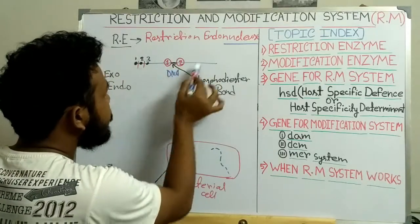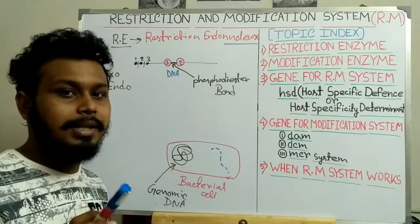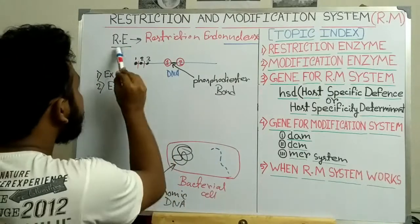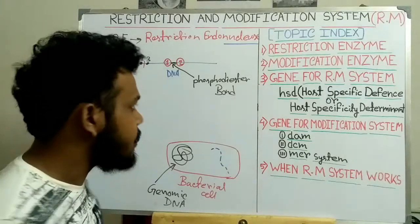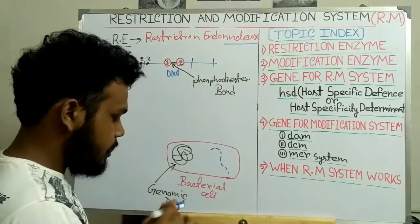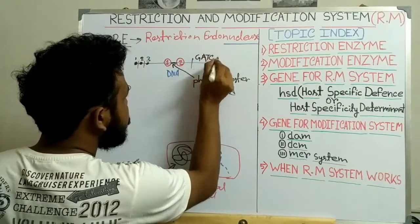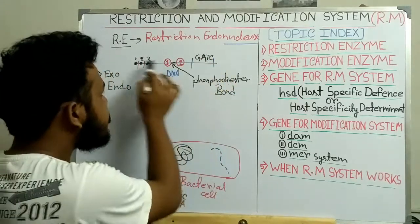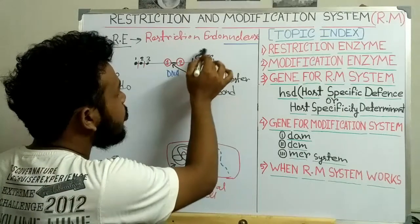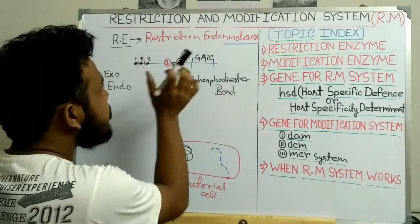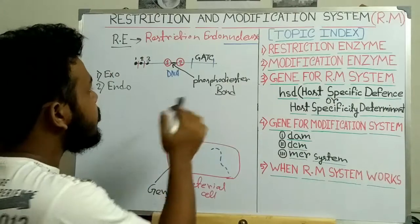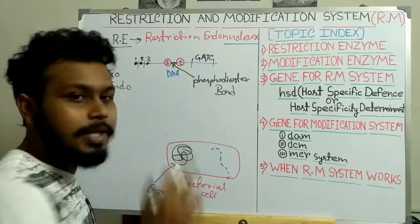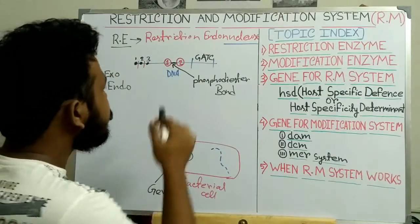As an endonuclease, the restriction enzyme can cut the DNA at any internal position. However, there is a regulation: the restriction enzyme particularly recognizes a specific sequence — for example, a sequence like GATCA — present in the DNA strand. The restriction enzyme recognizes this particular sequence and then cuts at a specific position within that sequence. So the restriction enzyme acts as an endonuclease that recognizes a particular sequence to cut the DNA at the phosphodiester bond between two nucleotides.